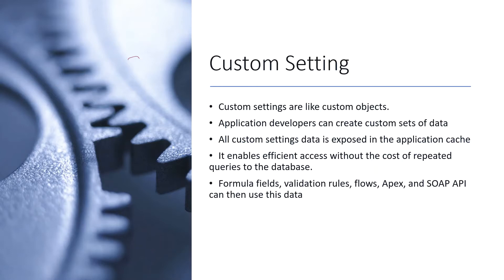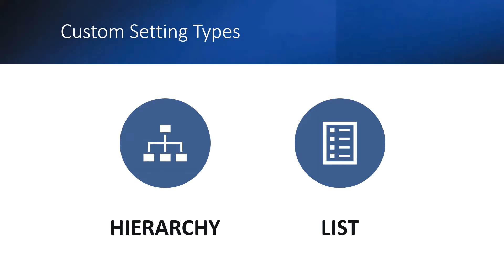There will be no queries hitting the database to get records, which is why it will be relatively faster than the standard query mechanism. Formula fields, evaluation rules, flow, Apex, and SOAP API can all use this data. So all these elements of Salesforce can use the data sets defined in custom settings. There are two types of custom settings: hierarchy and list.